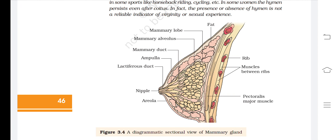This is a diagrammatic sectional view of the mammary gland, showing ribs, intercostal muscles, pectoralis major muscle, fat, mammary lobes, alveolus, mammary duct, ampulla, lactiferous ducts, nipple, and areola.